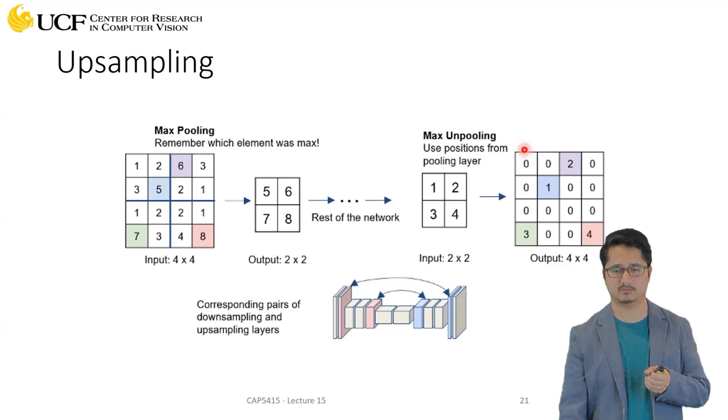And rest of the locations are zero, and which is fine because anyways these numbers were ignored. Three, two, one, they're not playing any role in these feature computations. They were just ignored when we perform max pooling, so they might not be required for upsampling as well. So we just put zero here. So that's the concept of max unpooling.